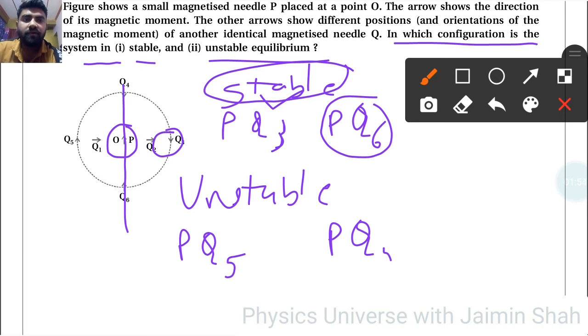Similarly for instability, P-Q5—on this horizontal point they should be in same direction. P and Q5 on horizontal direction they should be in same direction for unstable. And vertically for unstable, they should be opposite.